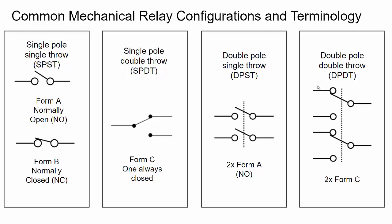The DPDT would be an example of two Form C switches. There are more types above Form C - triple pole and other configurations - but these are the most common. If you get familiar with these terms you can start to pick up the other terms as well.